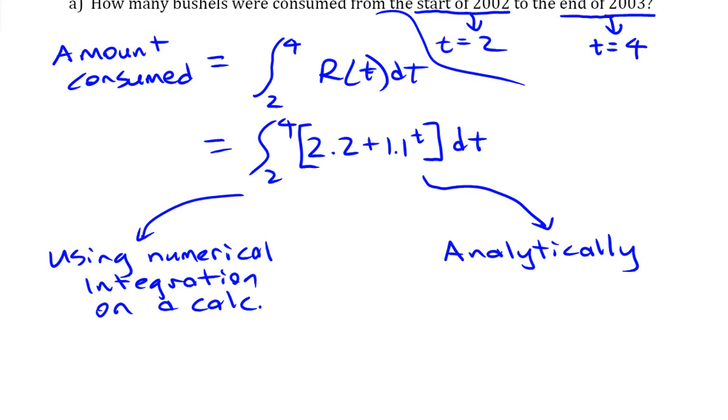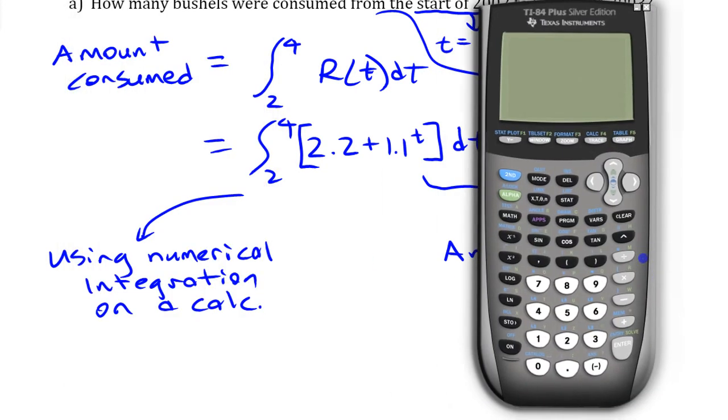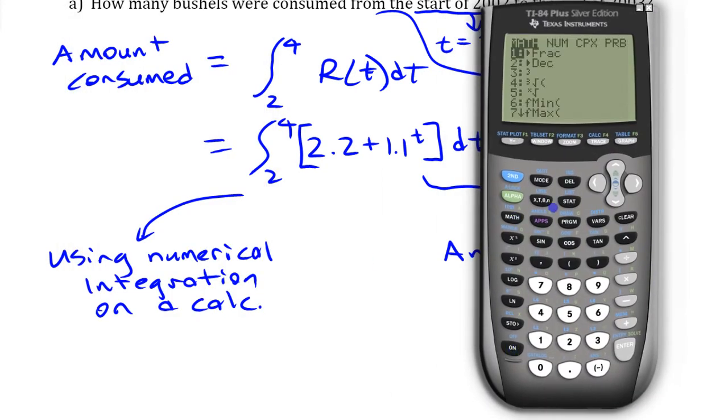If we're going to use the calculator, we need to find that numerical integration feature. On this particular calculator, it's down under the math menu. I need to put in that I want to go from 2 to 4 years. Put in my function 2.2 plus 1.1 to the power of—you can put in x or t, it doesn't really matter what variable you put in here. Just to match what I have there, I'll put in t, although it really wouldn't matter as long as that variable matched.